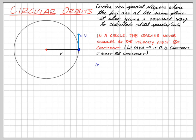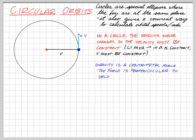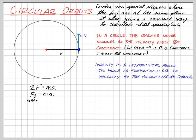Gravity acts like a centripetal force, pulling in toward the center, and is always perpendicular to the velocity. A force perpendicular to velocity changes only the direction, not the speed — that's key to remember in orbit. For a circular orbit, setting net force equal to centripetal acceleration: GMm/R² = mv²/R. Some R's and the mass of the satellite cancel out, giving us the orbital speed formula.